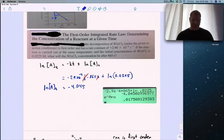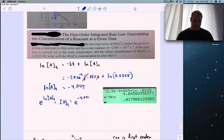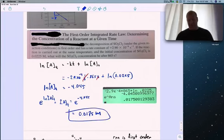You plug that in the calculator and get the natural log of A at time t. How do you get rid of the natural log? Take e to both sides. e to the natural log At equals At, which equals e to the minus 4.045, giving 0.0175 molar.